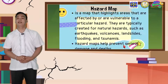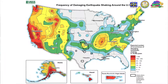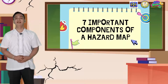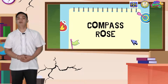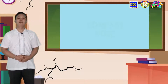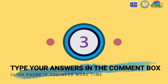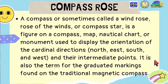Here is an example of an earthquake hazard map. We have seven important components of a hazard map. First, we have the compass rose. A compass, sometimes called a wind rose, rose of the winds, or compass star, is a figure on a compass, map, nautical chart, or monument used to display the orientation of the cardinal directions — north, east, south, and west — and their intermediate points. It is also the term for the graduated markings found on the traditional magnetic compass.